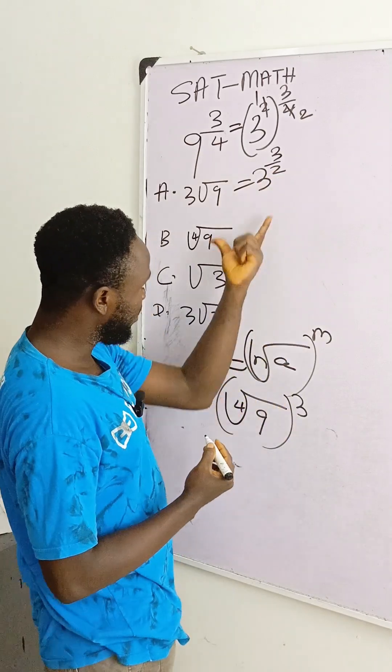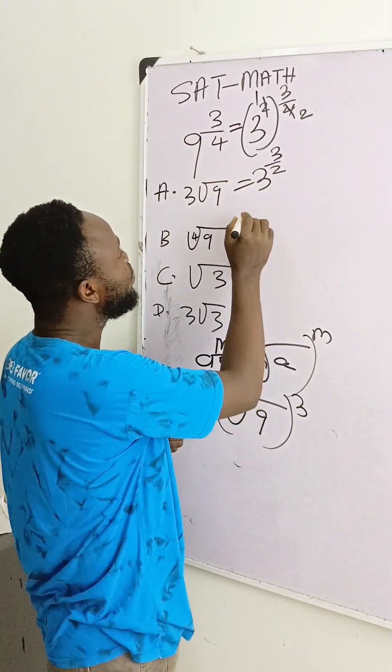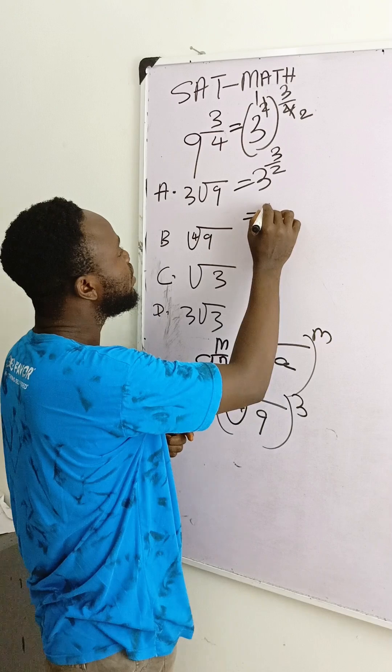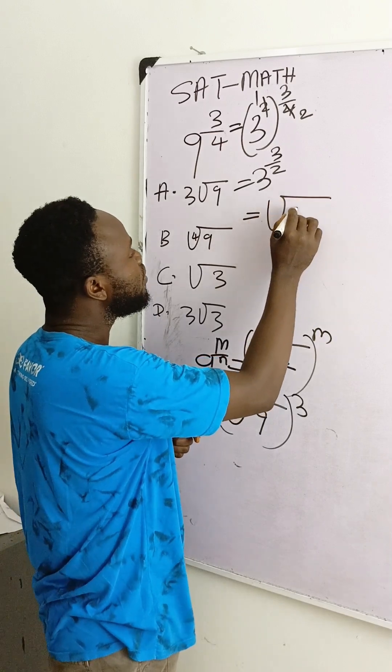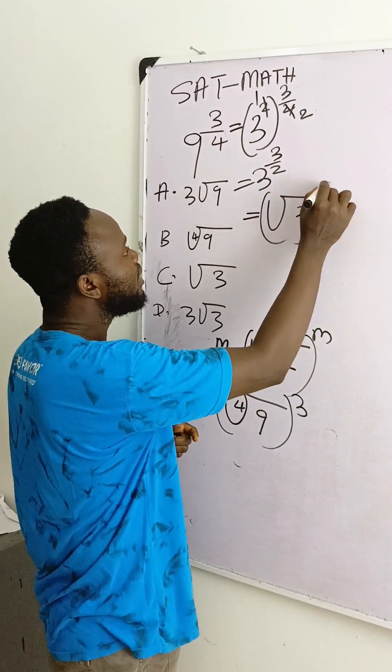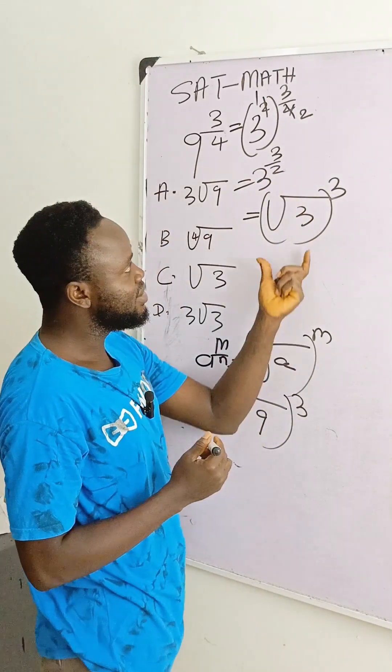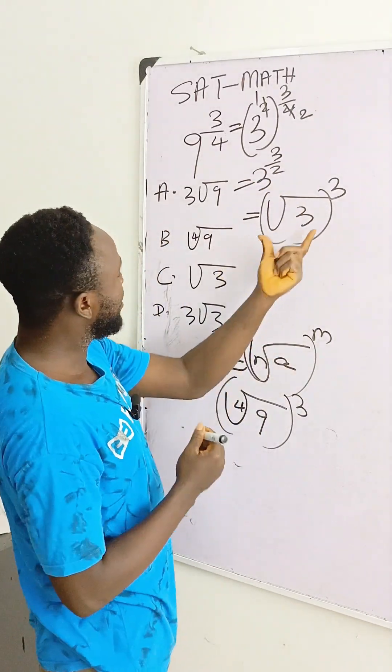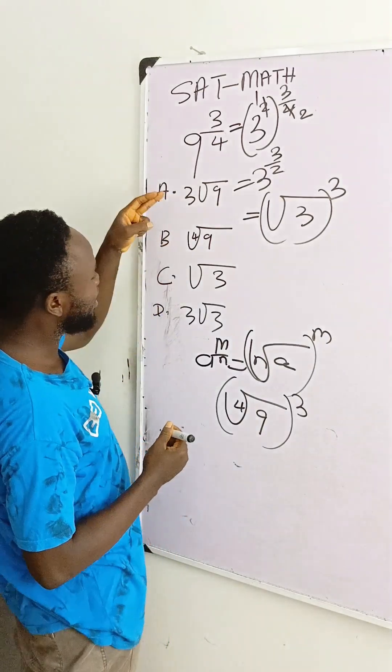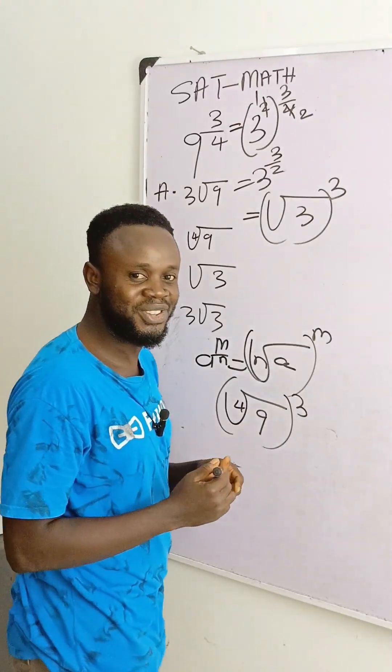And what we have here now is 3 raised to power 3 over 2. Then if we apply this law here, we can now have something of this nature: the square root of 3 raised to power 3. I will write the 2 here because this square root means 2. Then this is what we have here, and you can see that this thing, you can find the answer here in the option.